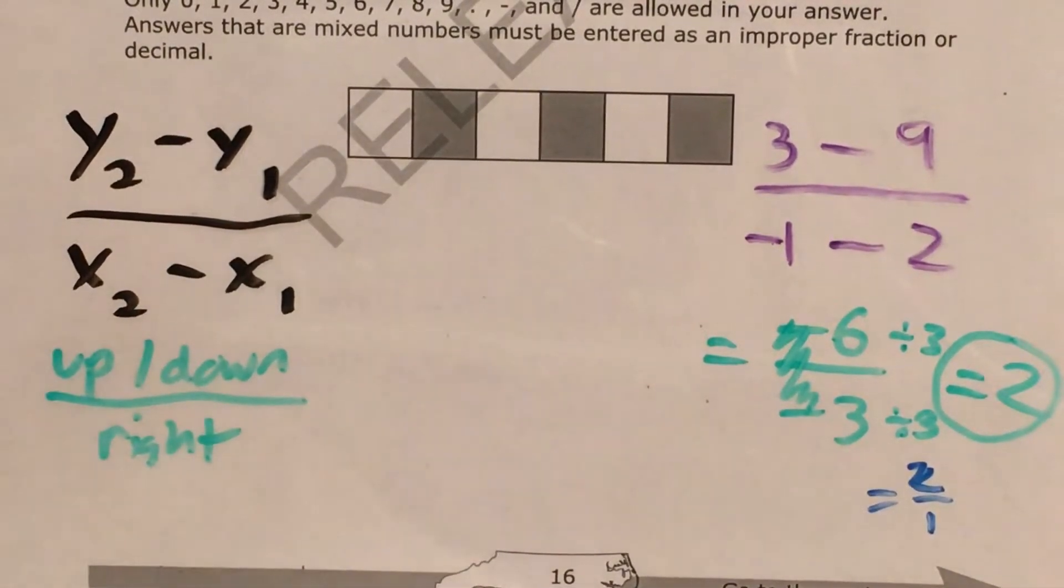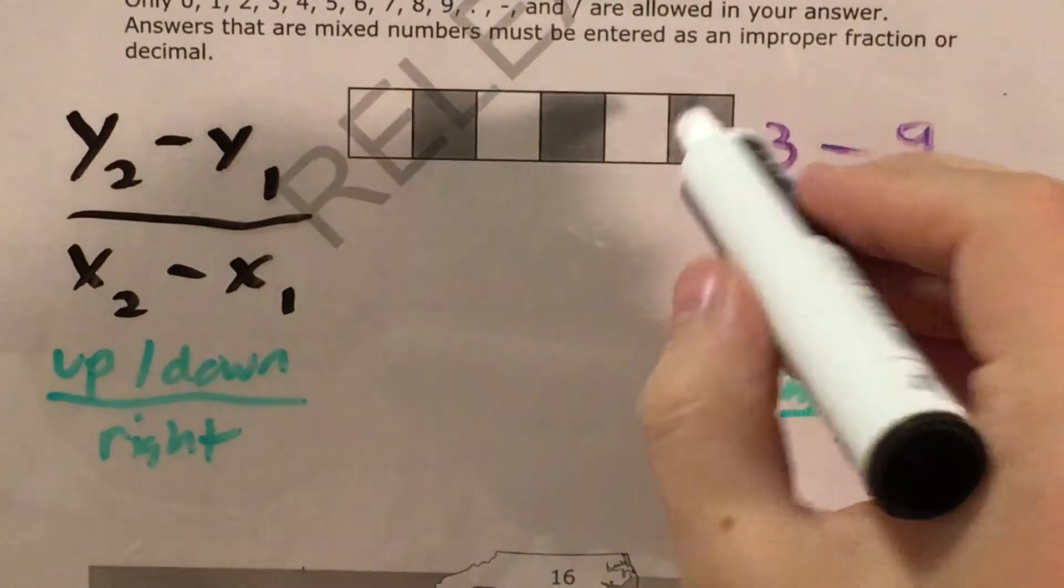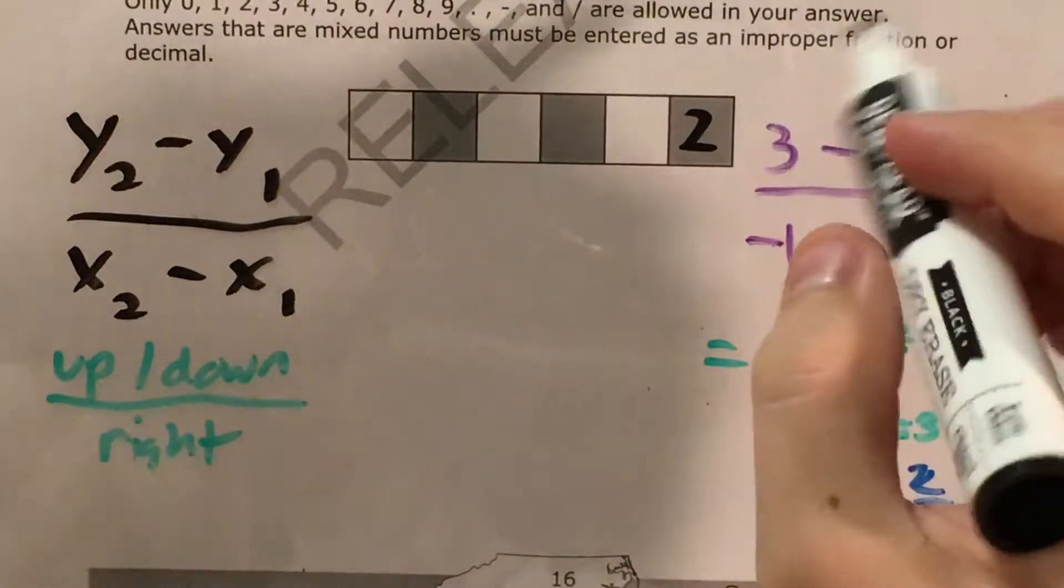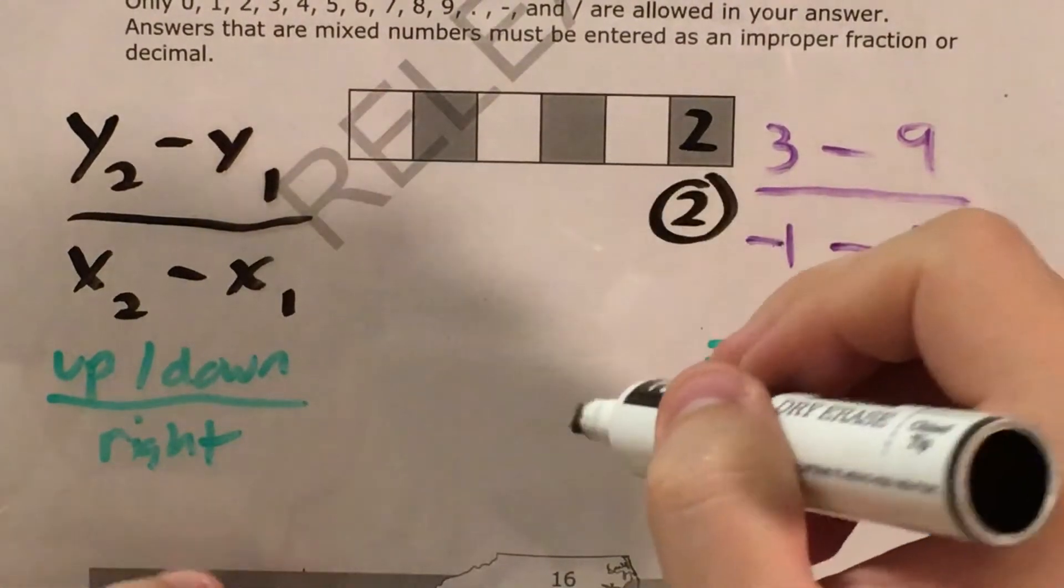But North Carolina will not accept that most likely. They'll just want us to write the number 2 in for our slope, so that's 2, and I find my 2 bubble and bubble it in.